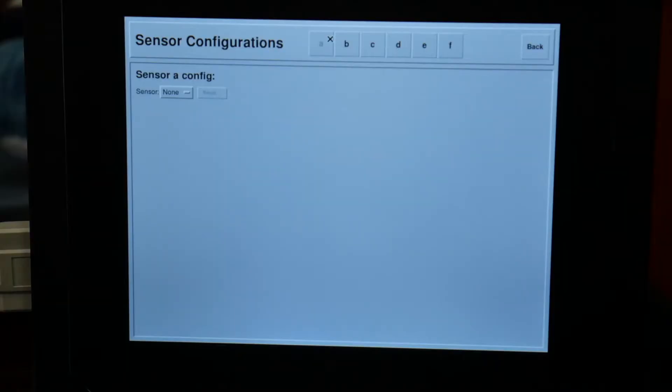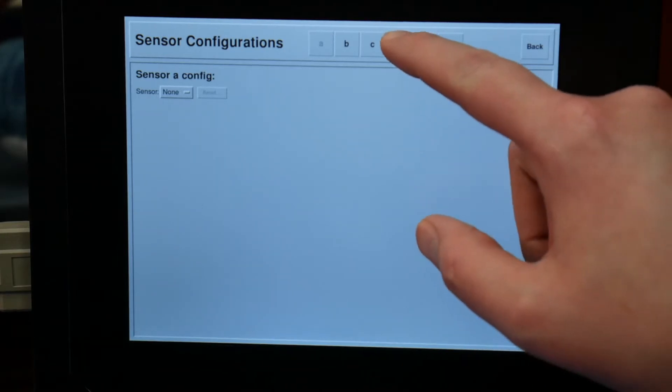Next go to the sensor configuration screen of the touch panel and select the letter on the top row that matches the port the sensor is connected to.